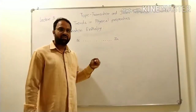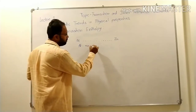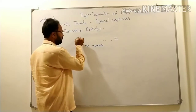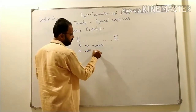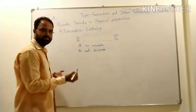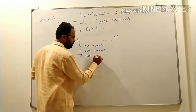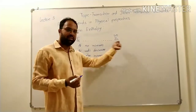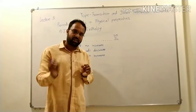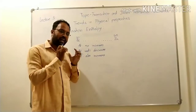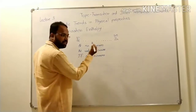In the first transition series — that means in the 3D series — from scandium to zinc, atomic number increases from 21 to 30, showing a similar trend. Atomic radii decreases, therefore ionization enthalpy also increases. As atomic number increases, atomic radii decreases, force of attraction increases, nuclear charge increases, and it becomes more difficult to remove the last electron. So ionization enthalpy increases in the first 3D series.